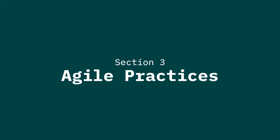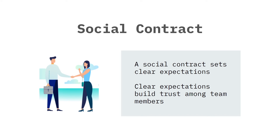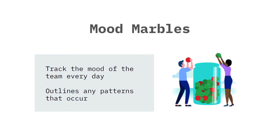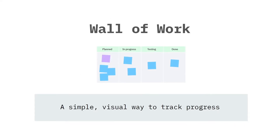Section three of this video will explore the six Agile practices. The first is a social contract which sets clear expectations — clear expectations build trust amongst team members. The second practice is mood marbles, used to track the mood of the team every day. This approach outlines any patterns that occur, allowing issues to be highlighted and addressed ahead of time. Next we have the wall of work, a simple visual way to track progress, making it easy to see ownership of tasks and who is responsible for completing them.